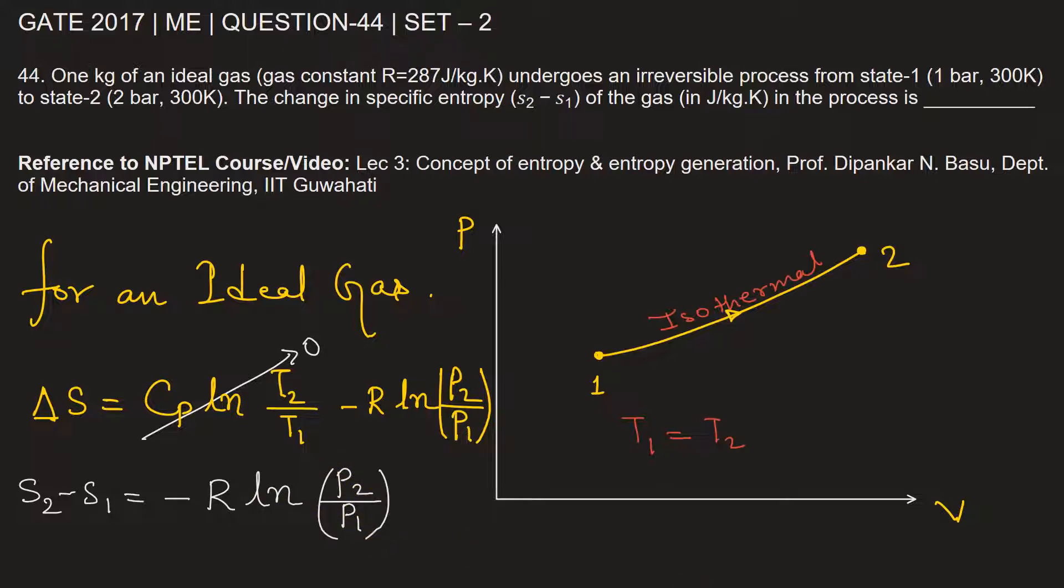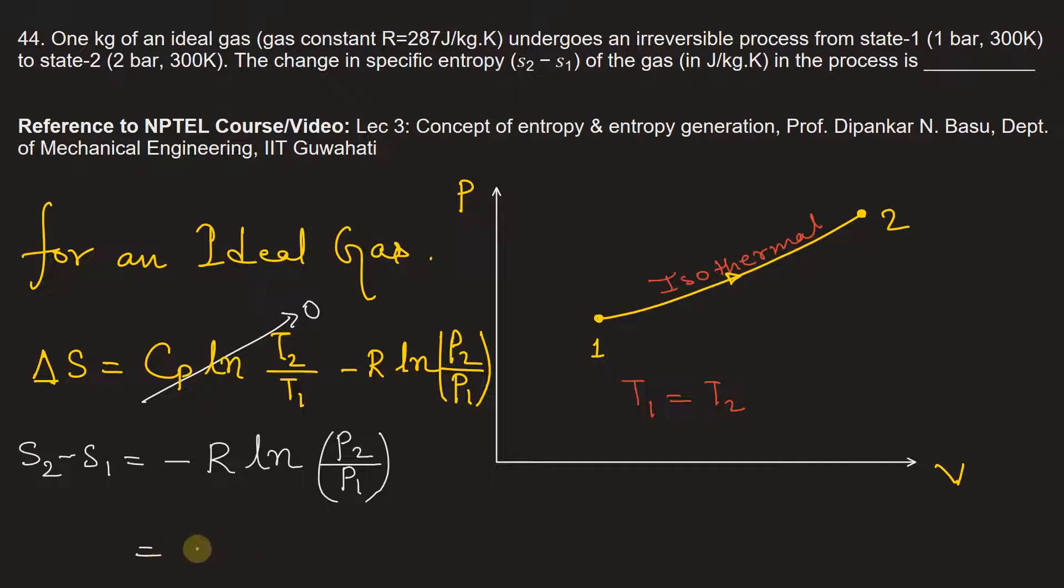Now let's substitute the values here. The value of R given in the problem is 287, this will be negative ln P2 is 2 bar divided by 1 bar.